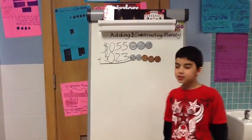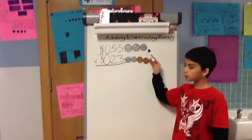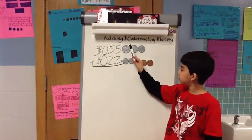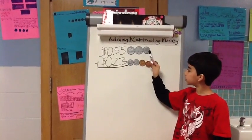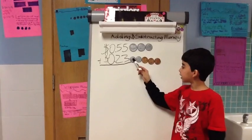I'm going to teach you how to add 55 cents and 18 cents. Here's our model for 55 cents. A quarter and a quarter is 50, and then a dime makes it 55.